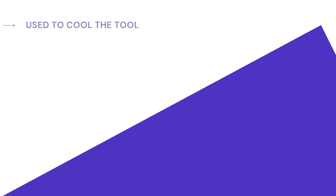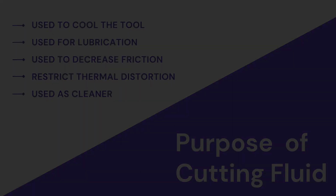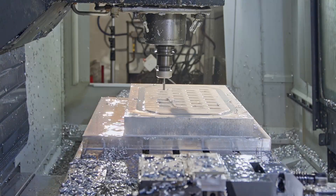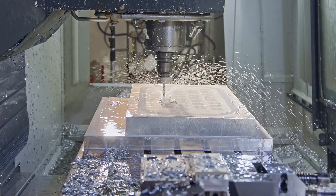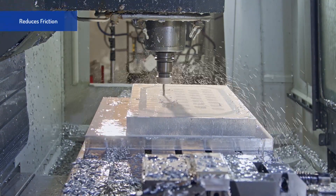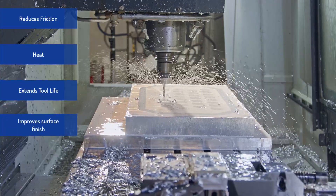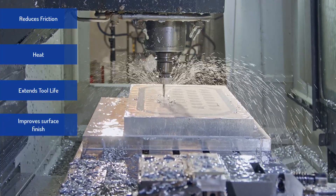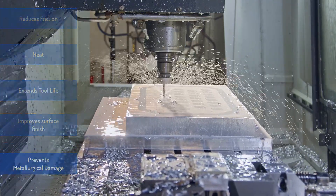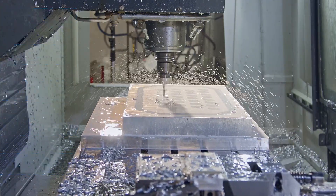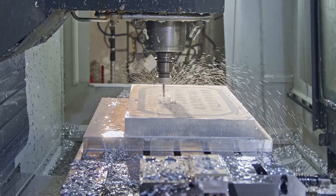Now you must be wondering what is the purpose of using a cutting fluid? Well there are several reasons. Firstly, cutting fluid reduces friction and heat, extends tool life, improves surface finish, and prevents metallurgical damage during cutting. It also helps chips to clear easily from the workpiece.